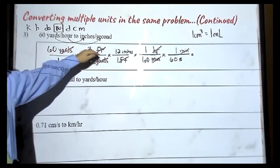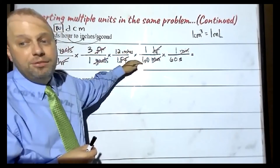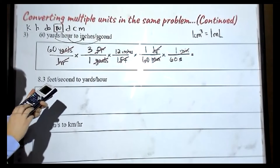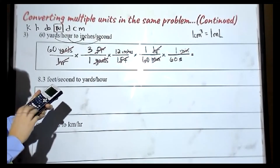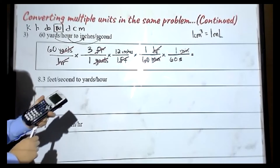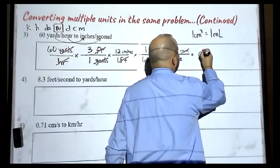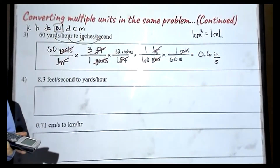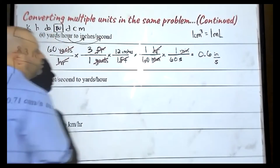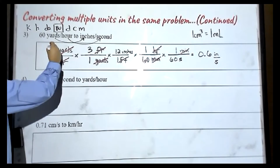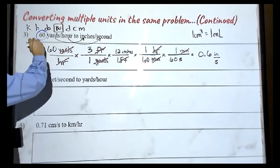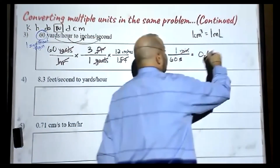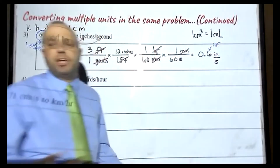Now I can type all of this into my calculator. I have 60 times 3 times 12, because they're on top, divided by 60, and then divided by 60 again. Typing into my calculator: 60 times 3 times 12, then divided by 60, then divided by 60 again, and I wind up with an answer of 0.6 inches per second. In this number, we have one significant figure, and over here we have one significant figure. So that is our final answer.